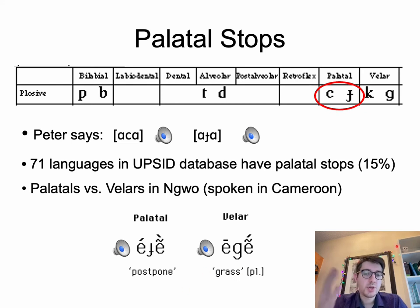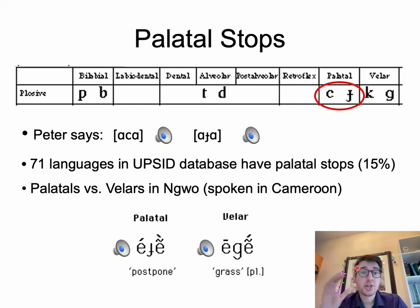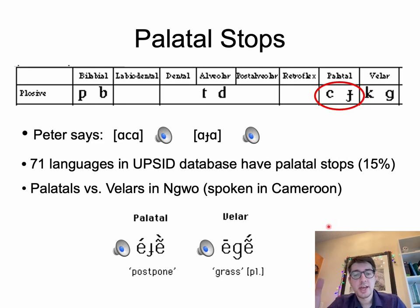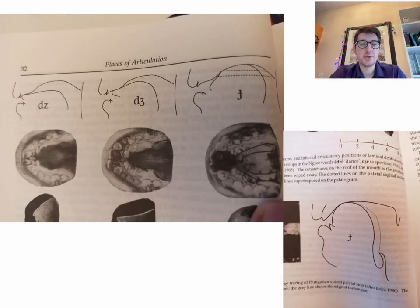Just try them a couple of times and you'll get the hang of it — learning the mechanisms helps. We find these sounds in Turkish, Hungarian, Kwakiutl (an indigenous language), Khmer, Ghanaian languages, Basque, Breton, and so on — quite a few languages have palatal stops.